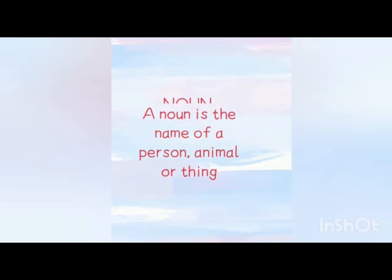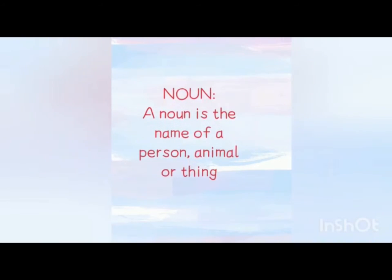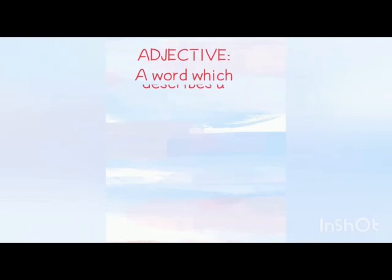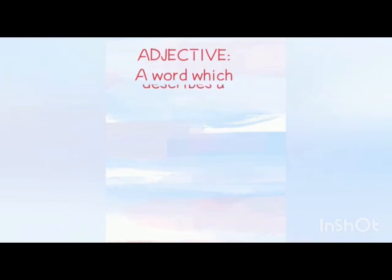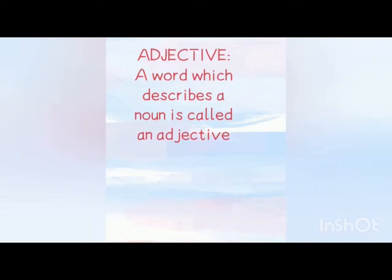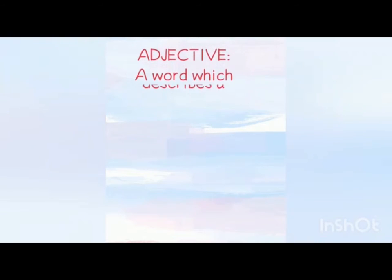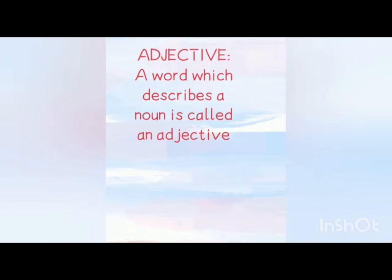First topic is Noun. A noun is the name of a person, animal or thing. Page number 1. Adjective: a word which describes a noun is called an adjective. Page number 3. We also covered a Verb. Page number 2.